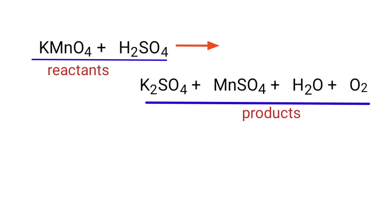In this equation, the reactants are Potassium Permanganate and Sulfuric Acid, and the products are Potassium Sulphate, Manganese Sulphate, Water, and Oxygen.